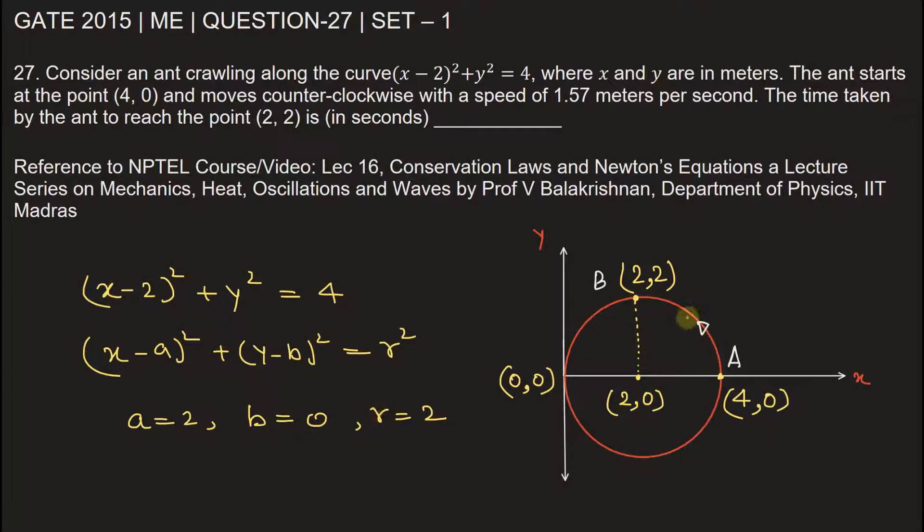Now we need to calculate the arc length from A to B. We know the distance AB will be equal to one-fourth of the circumference of the circle, and the circumference of a circle is 2πR,